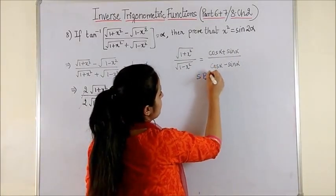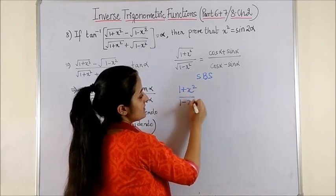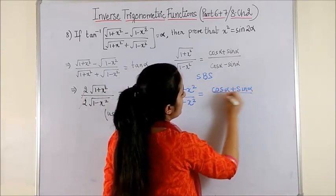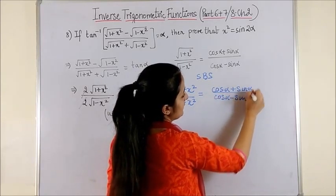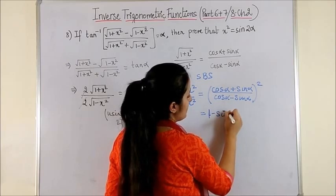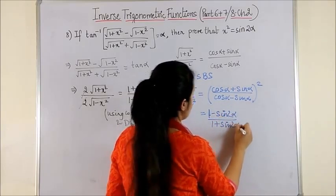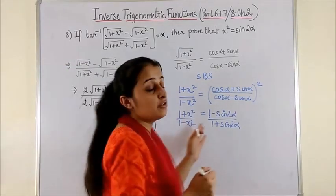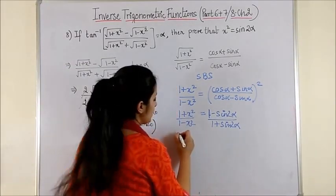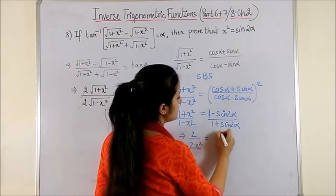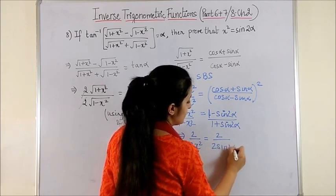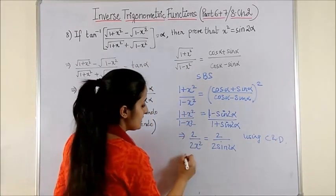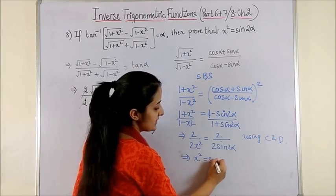Squaring both sides, we get (1 + x²)/(1 − x²) = (cos α + sin α)²/(cos α − sin α)². This simplifies to (1 + sin 2α)/(1 − sin 2α). Applying componendo and dividendo again gives 2/(2x²) = 2/(2sin 2α). So x² = sin 2α — exactly what we wanted to prove.